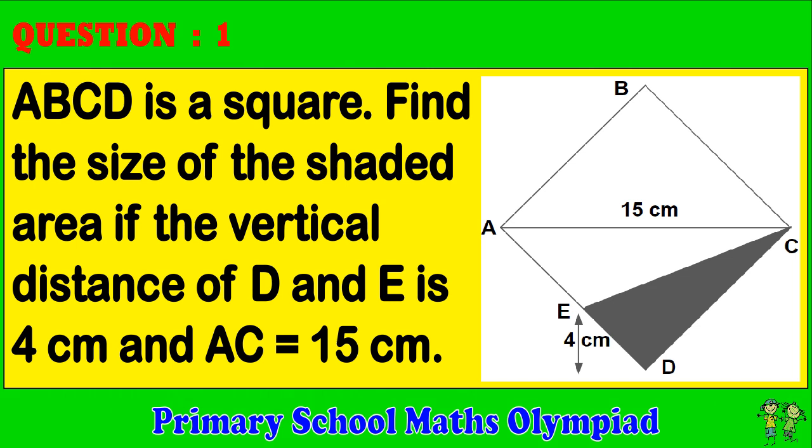Question 1: ABCD is a square. Find the size of the shaded area if the vertical distance of D and E is 4 cm and AC equals 15 cm.